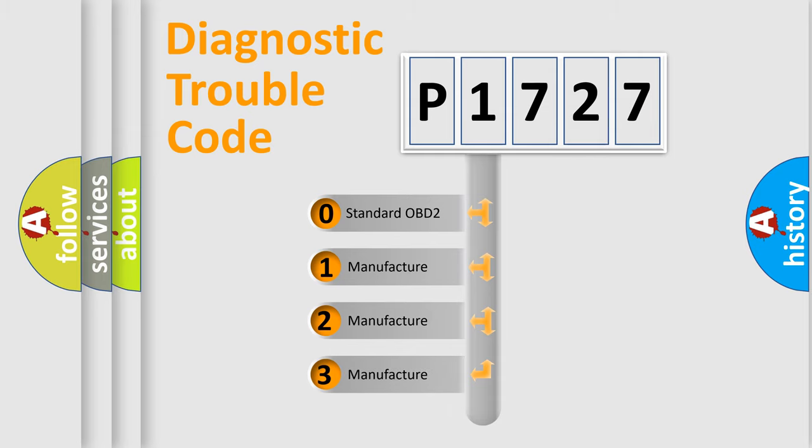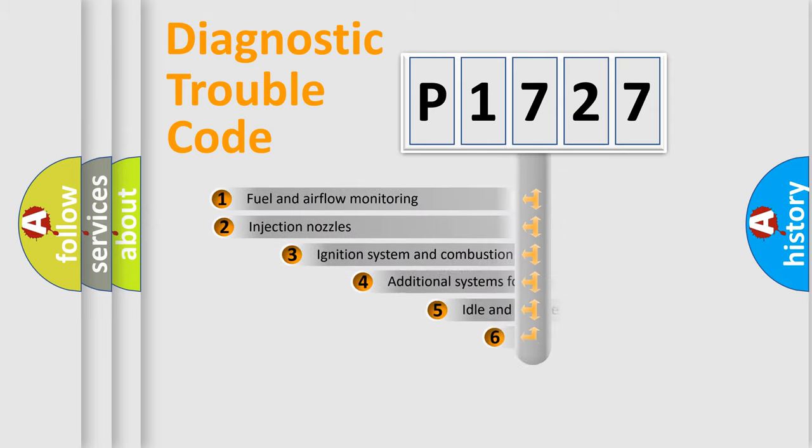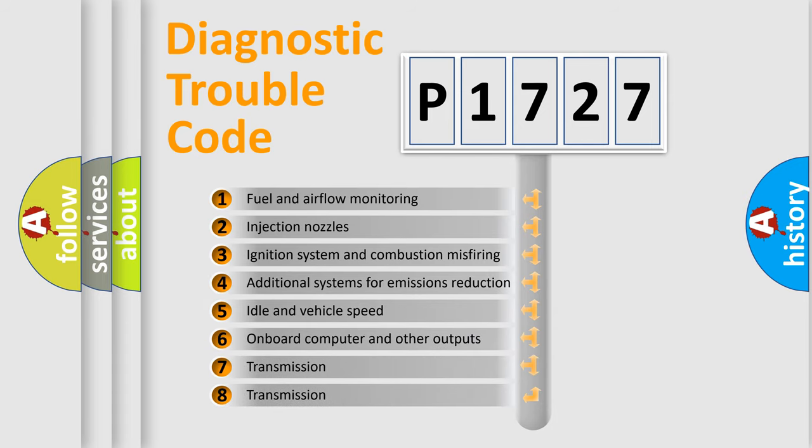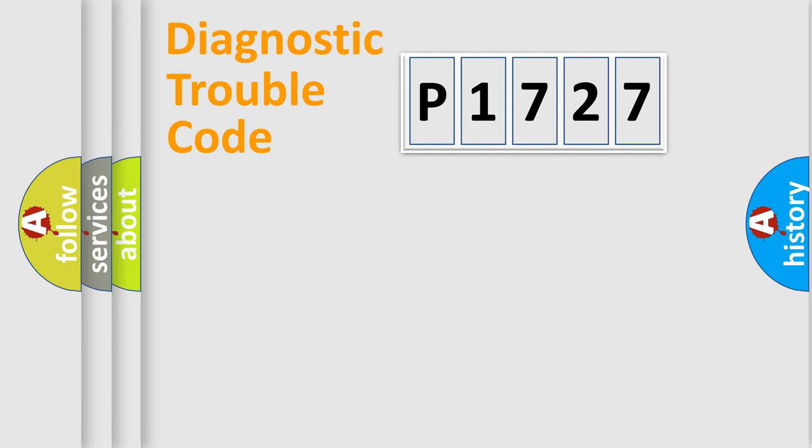If the second character is expressed as zero, it is a standardized error. In the case of numbers 1, 2, 3, it is a manufacturer-specific expression of the car-specific error. The third character specifies a subset of errors. The distribution shown is valid only for the standardized DTC code.